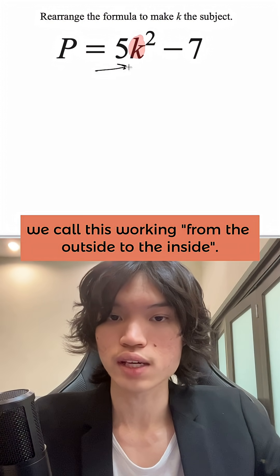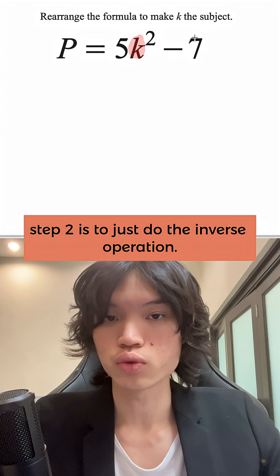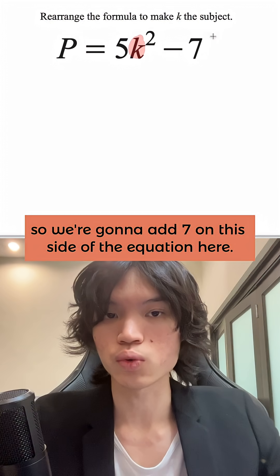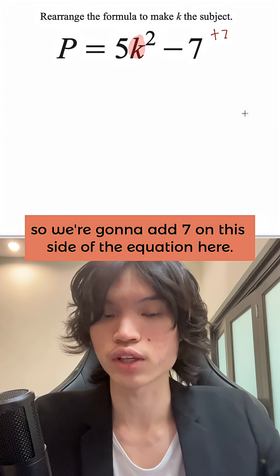We call this working from the outside to the inside. Step two is to just do the inverse operation. The reverse of negative 7 is just to add 7, so we're going to add 7 on this side of the equation here.